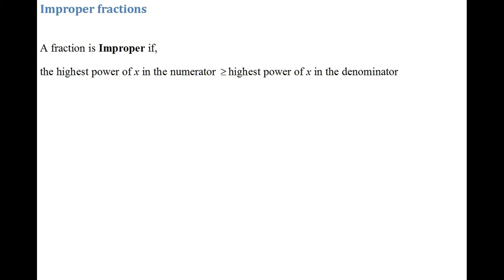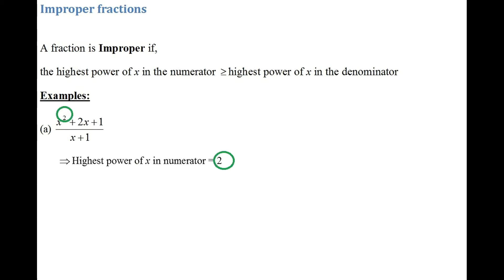So if you have a fraction whereby the highest power of x in the numerator is greater than or equal to the highest power of x in the denominator, then you have an improper fraction. Take this example: x squared plus 2x plus 1 divided by x plus 1. The highest power of x in the numerator is 2, and in the denominator, the term x plus 1, the highest power is 1. So 2 is greater than 1, hence we have an improper fraction.